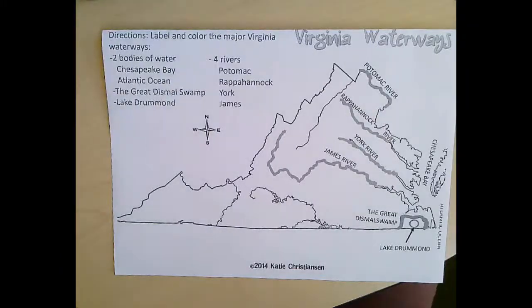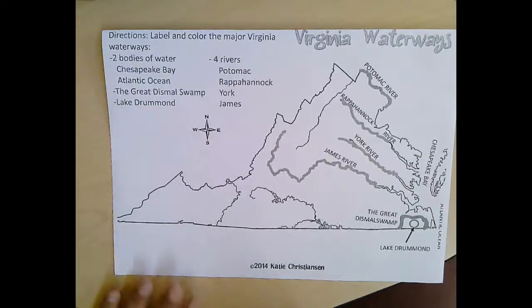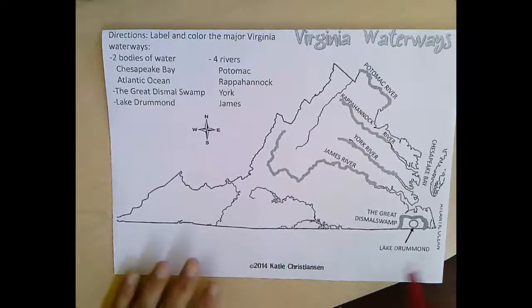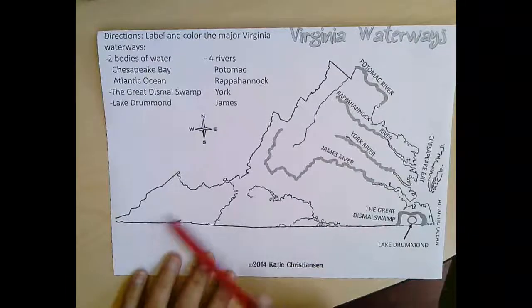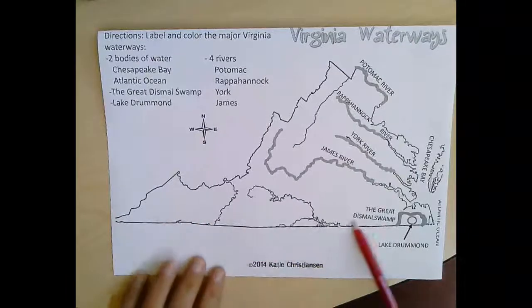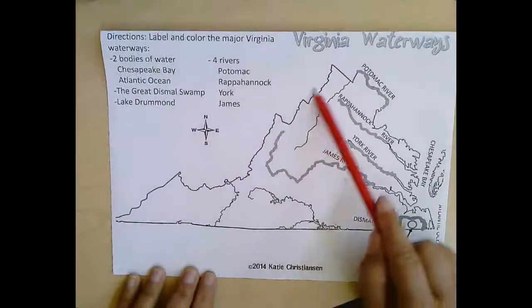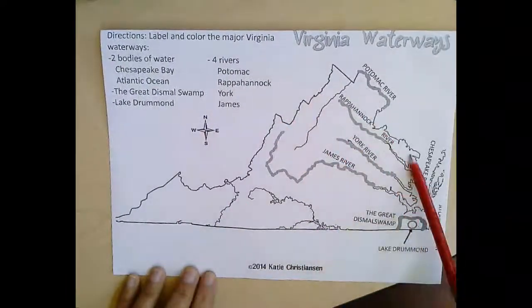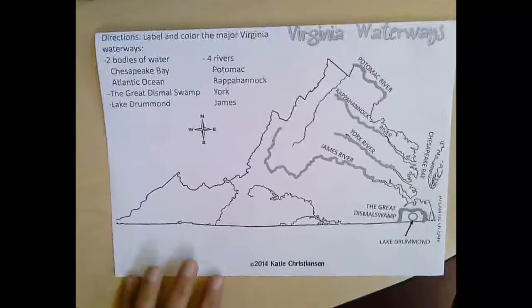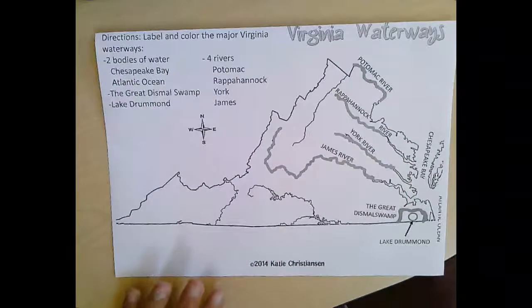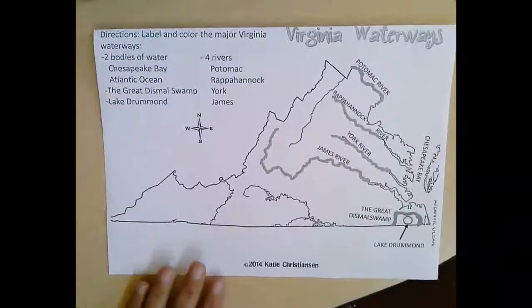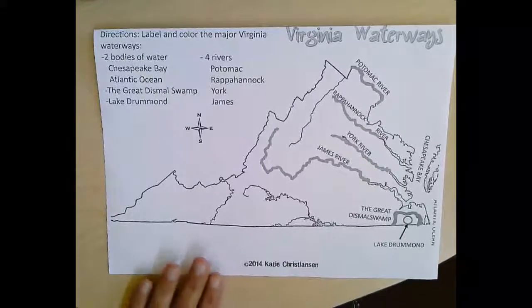Hey boys and girls, it's Mrs. Campbell again. So today we're going to talk a little bit more about Virginia's waterways. We're going to look at this map of Virginia — remember it looks like a sideways triangle. Right now we're just reviewing, so you don't need to draw or write anything at this time.